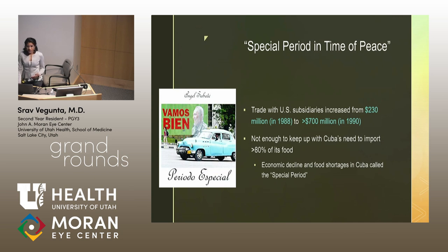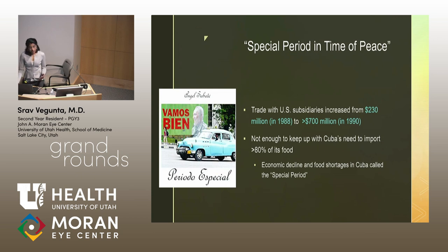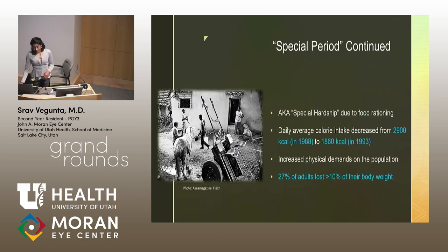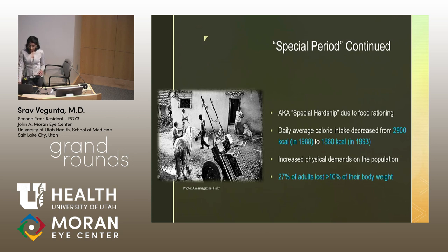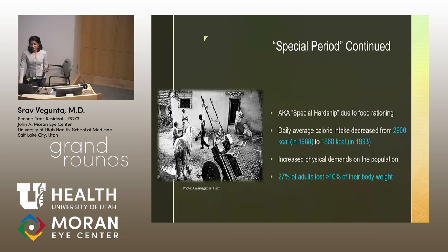Cuba was set up as a Spanish colony to produce sugar, rum, and molasses — not necessarily to produce the vegetables and fruits needed to sustain the population. The Cuban people renamed this the 'special hardship' rather than the special period due to all the food rationing. The daily average calorie intake decreased from 2,900 calories to 860 per person. Physical demands increased because there was less fuel, so people had to walk, bicycle, and pull carts. 27% of adults lost greater than 10% of their body weight during this time, and Cuba imported over 700,000 bicycles to sell cheaply to the population.